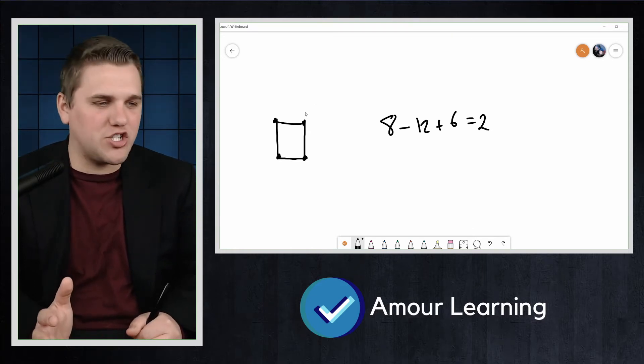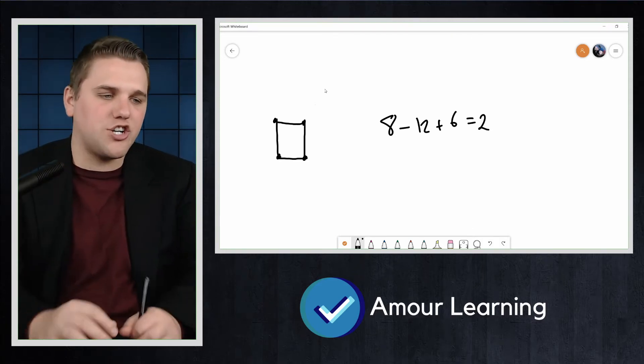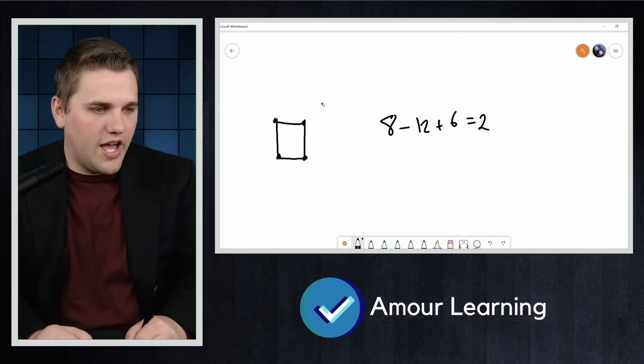And again, it doesn't need to be a perfect square because this is just some sort of projection. We're bending things. And so this would be maybe the other face.